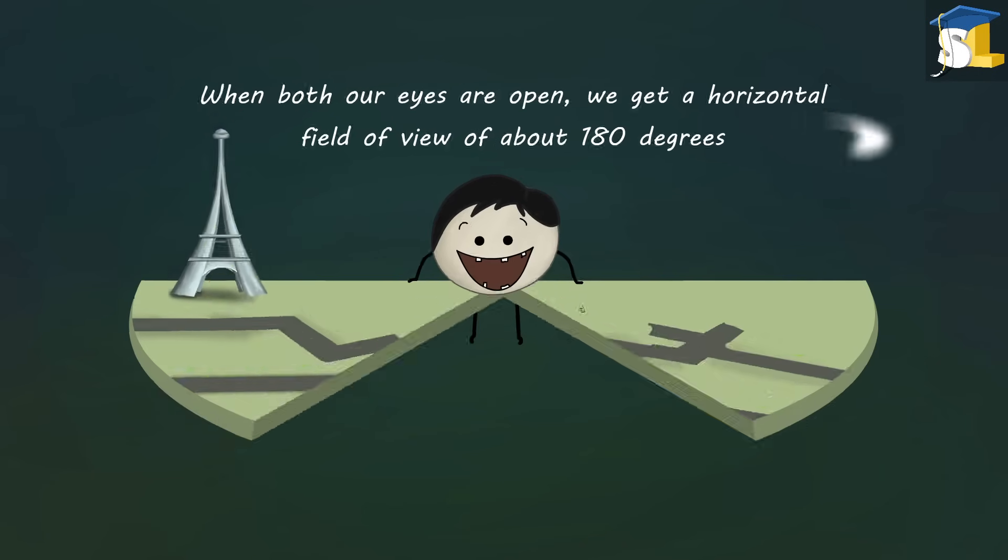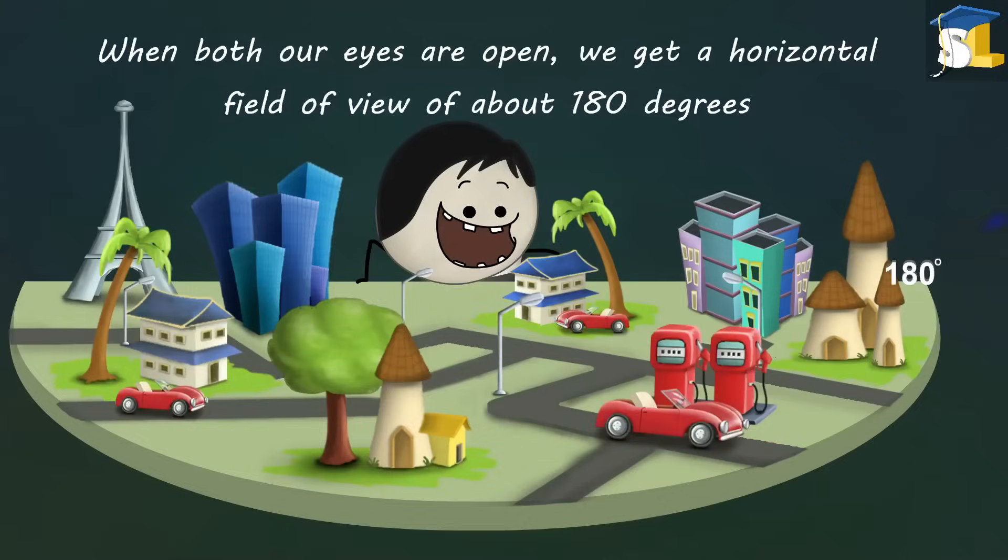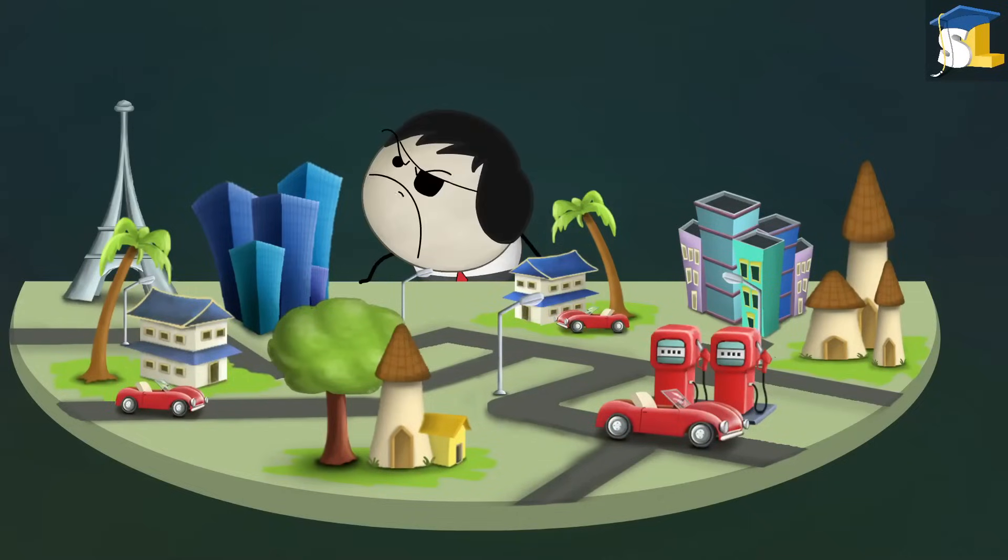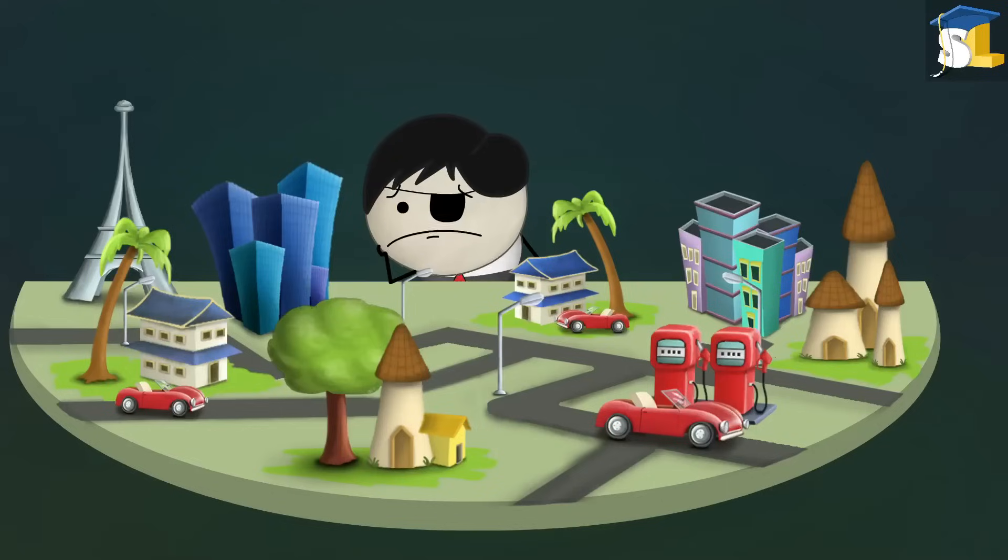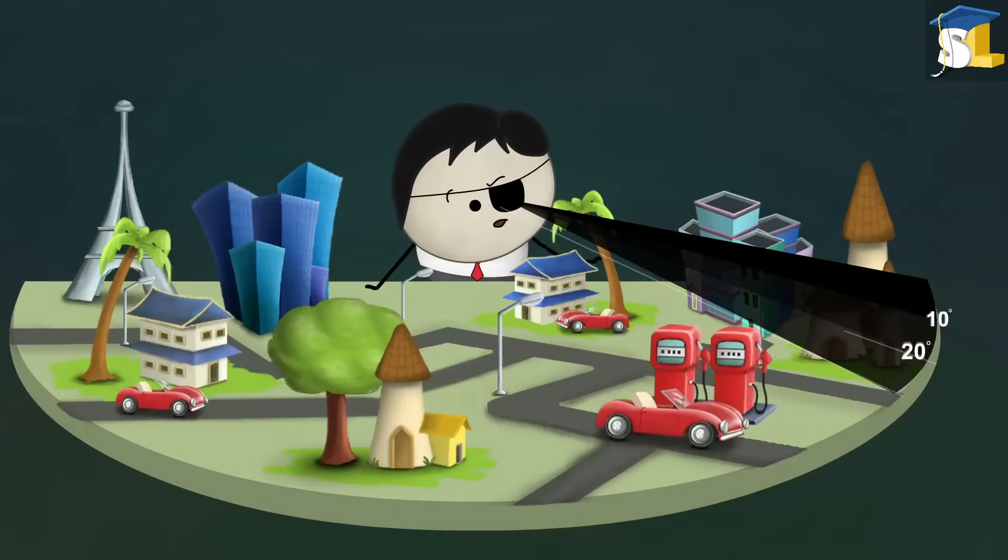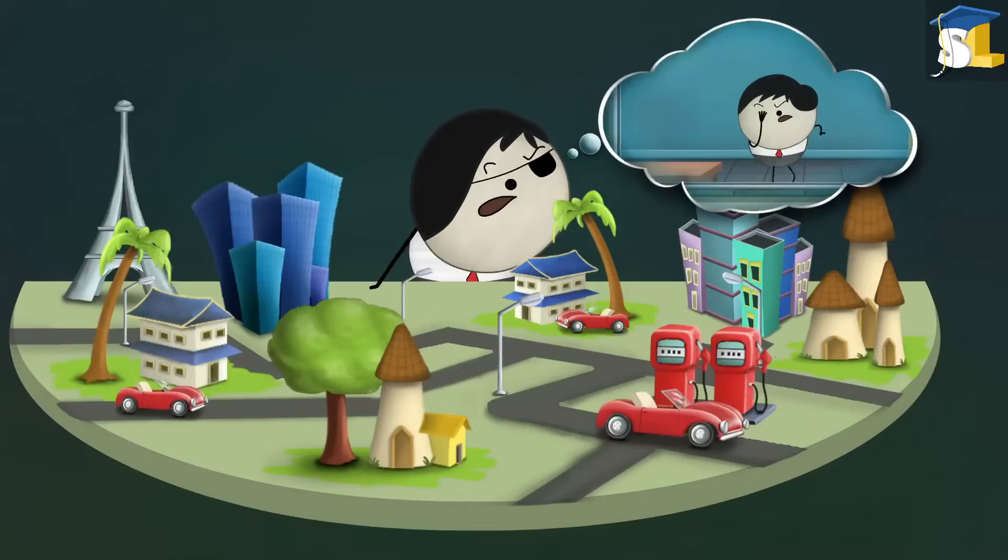When both our eyes are open, we get a horizontal field of view of about 180 degrees. However, with only one eye open, we get a horizontal field of view of only around 150 degrees. We are unable to view around 20 to 30 degrees. Hence, we are not able to see the table when one eye was closed.